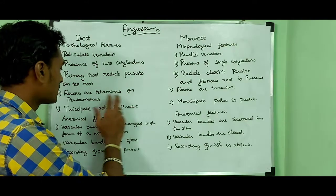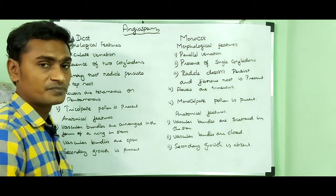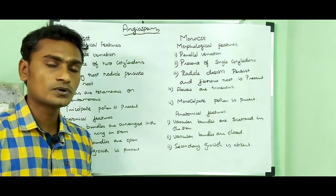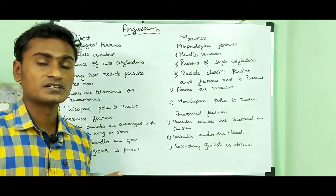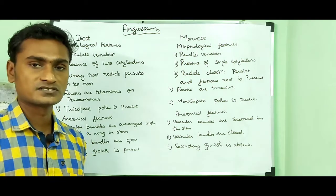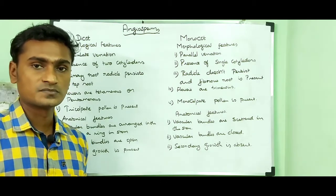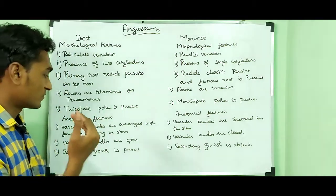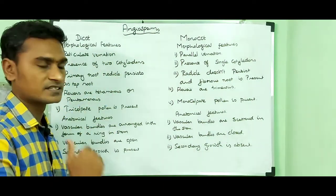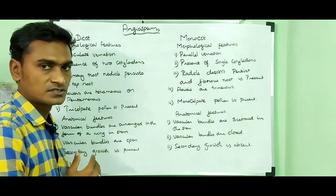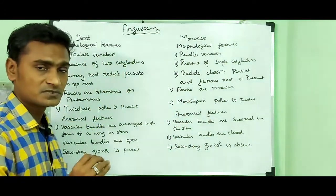Dicot flowers are tetramerous or pentamerous, while monocot flowers are trimerous. Tetramerous means the floral whorls — calyx, corolla, androecium, and gynoecium — are in multiples of four. Pentamerous means multiples of five, so five sepals, five petals, and so on. Trimerous means multiples of three: three sepals, three petals, and so on. So in dicot plants, pentamerous or tetramerous flowers are seen, and in monocots, trimerous flowers are seen.